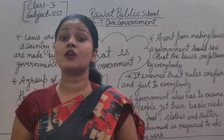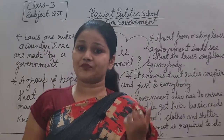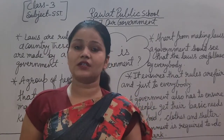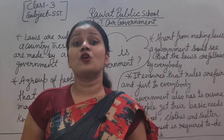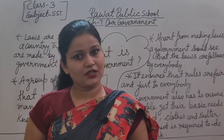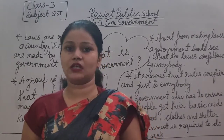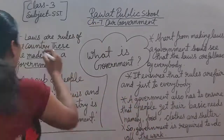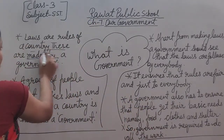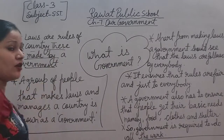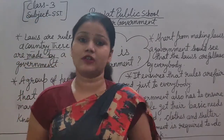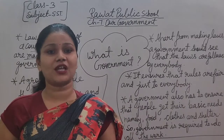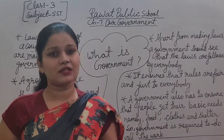So what is government? In the previous chapter, we already learned that laws are rules of a country. Laws क्या होते हैं — हमारी country के लिए जो rules होते हैं उन्हें law कहा जाता है। Those rules of a country are made by the government — हमारी सरकार।